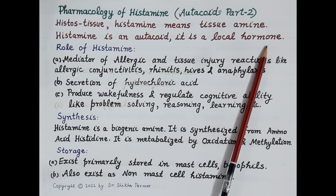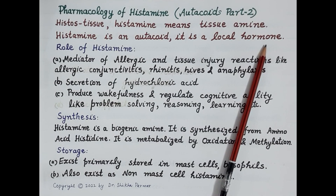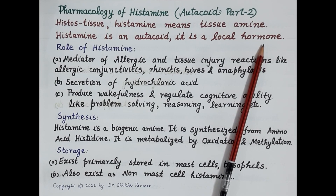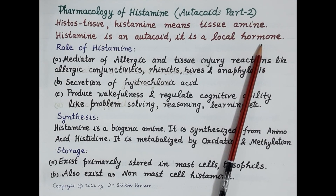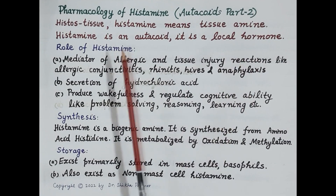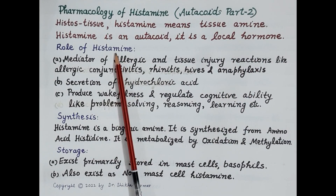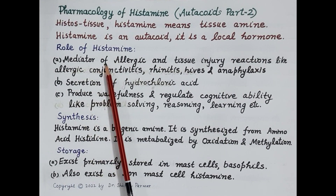Histamine is an autocoid — a local hormone — as it is produced locally in the body at a particular site, for example at the site of allergy or at the site of tissue injury. It acts locally where it is produced and is also degraded or metabolized locally.